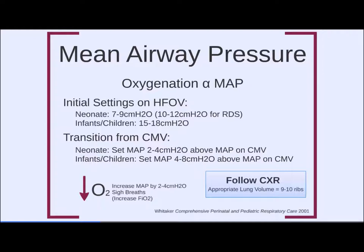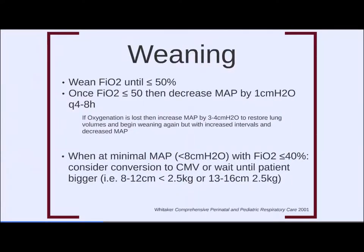We follow chest X-ray to guide airway pressures — something we do well in pediatrics. Appropriate lung volume at 9–10 ribs suggests a good mean airway pressure zone. If you see 11–12 ribs with flattened diaphragms, MAP is probably too high and can be reduced. Weaning: decrease FiO₂ to below 50%, then reduce MAP by ~1 cm H₂O every 48 hours. If oxygenation is lost, increase MAP by 3–4 cm H₂O to restore lung volume, then re-wean more slowly. At MAP <8 cm H₂O with FiO₂ ≤40%, consider converting to conventional ventilation.